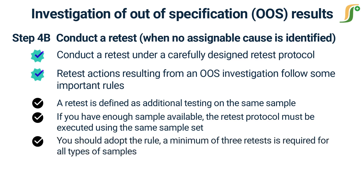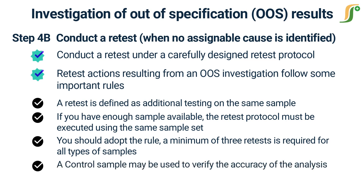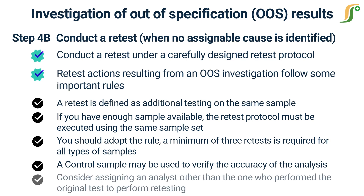You should adopt the rule that a minimum of three retests is required for all types of samples, except a minimum of five retests is required for formulated products. A control sample may be used to verify the accuracy of the analysis, and the retest protocol must specify acceptance criteria for the control sample. Consider assigning an analyst other than the one who performed the original test to perform retesting. You cannot continue retesting indefinitely — the retest protocol should nominate the number of retests required. At the conclusion of retesting, a decision to either accept or reject the batch should be made. Additional retesting should not be conducted simply to test the product into compliance.